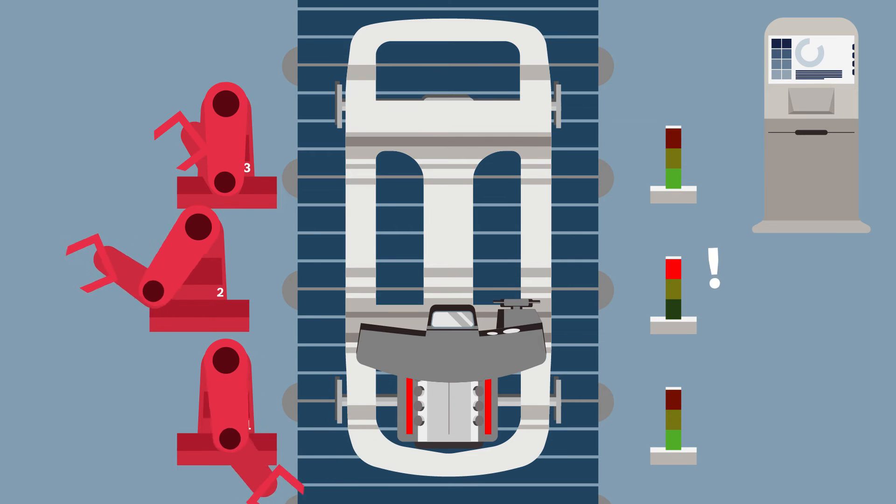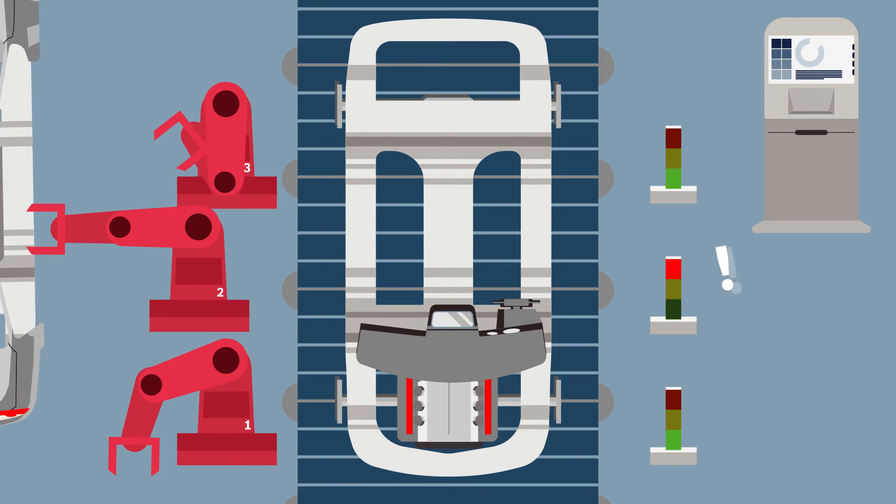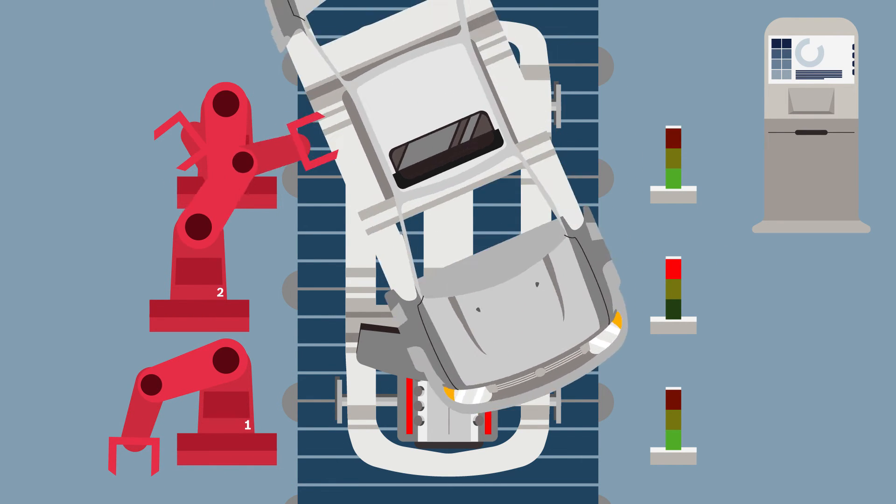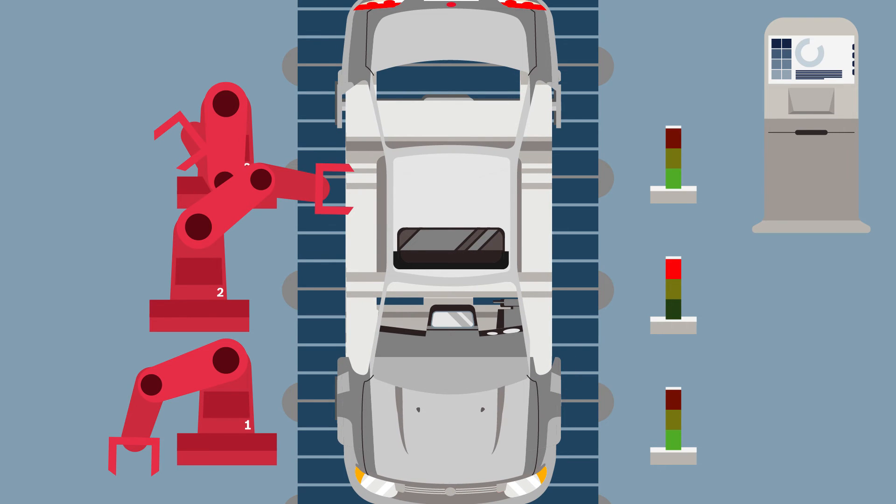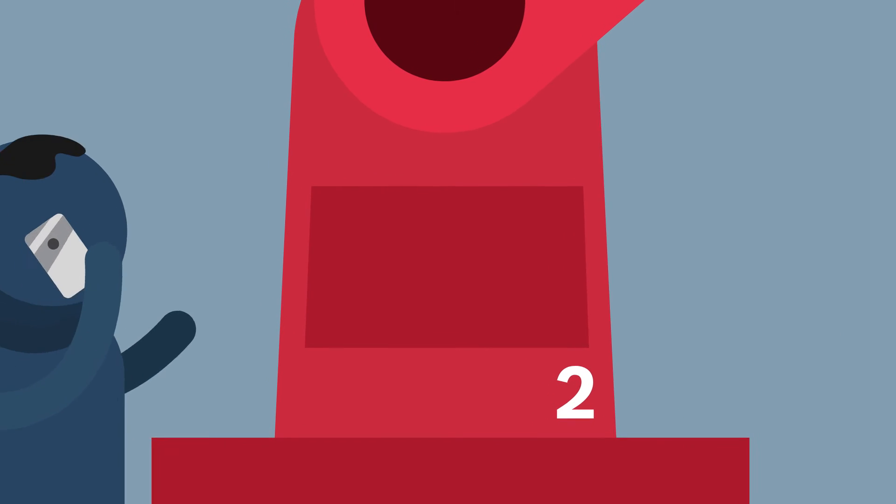Now suppose one of these machines is starting to malfunction. Since it's part of the manufacturer's Industry 4.0 platform, data generated by the machine predicts a breakdown before it actually happens. The operator receives a message and can contact Bosch Rexroth service.